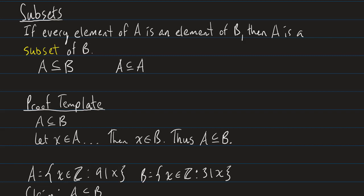Now we're going to talk about proving that A is a subset of B. What you do is let X be some arbitrary element of A, take some logical steps forward, and conclude that X also must be an element of B. Thus, A is a subset of B.